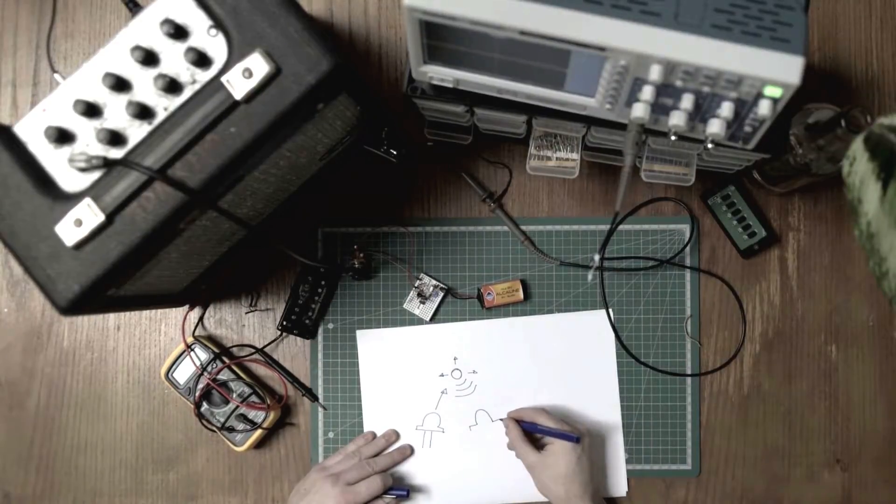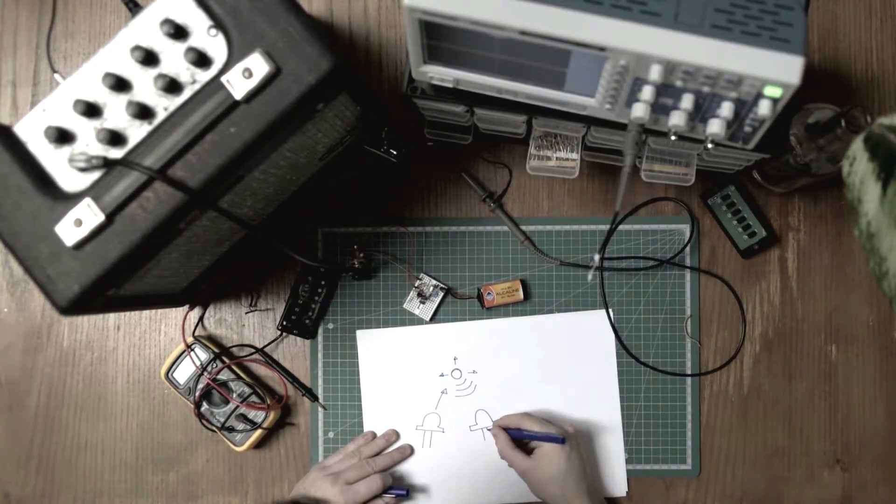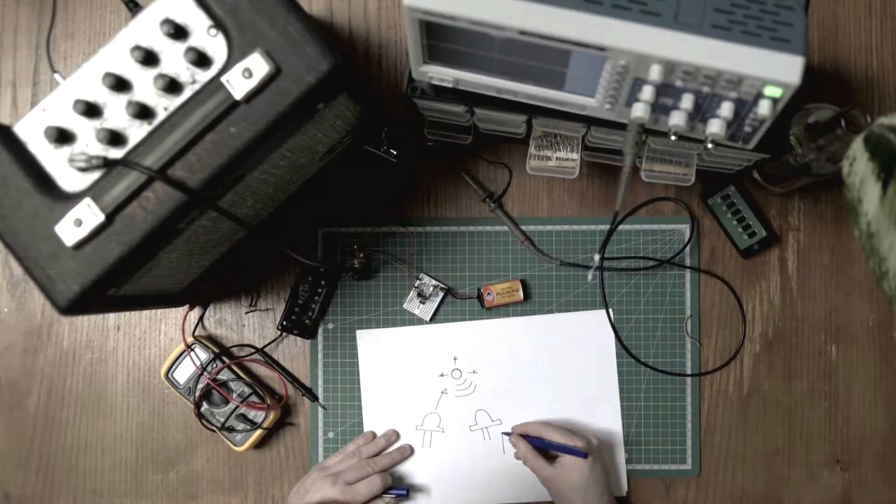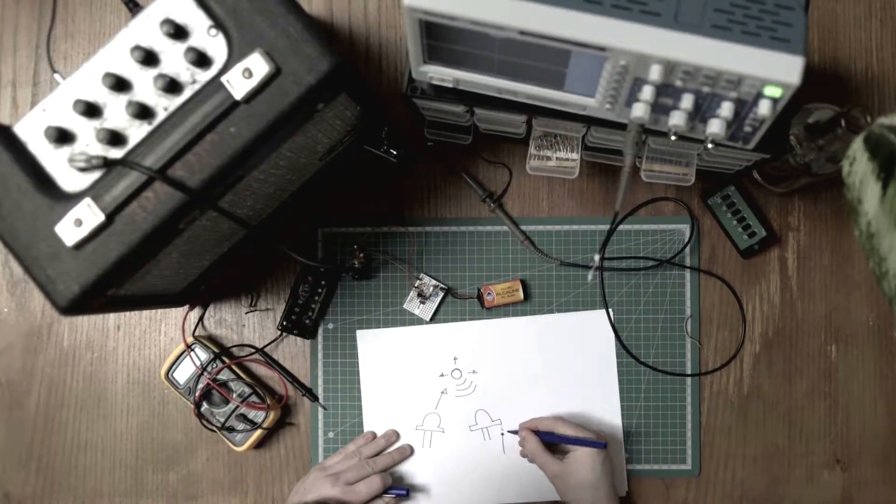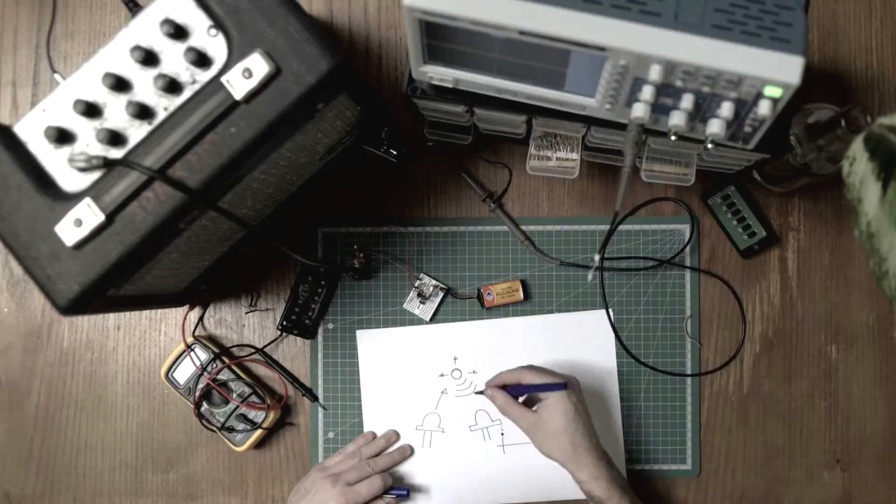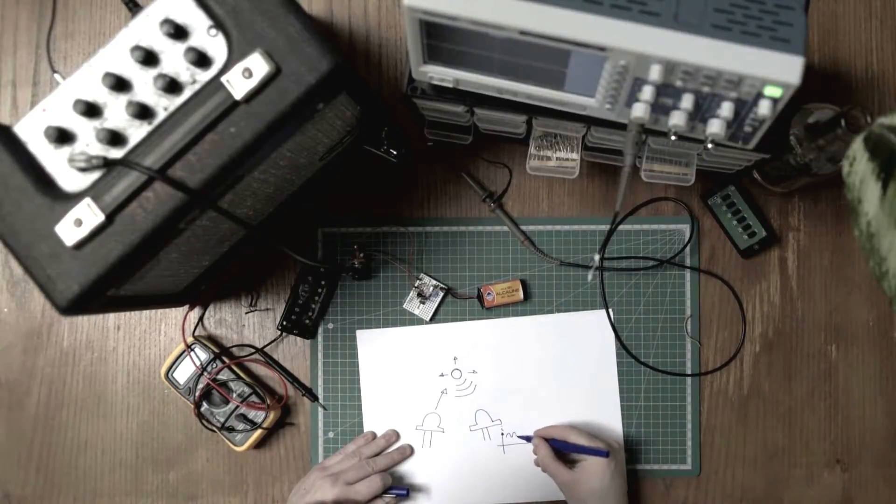Basically, what a photodiode does is emit a current with intensity relative to the light it's receiving, so it would look like this.